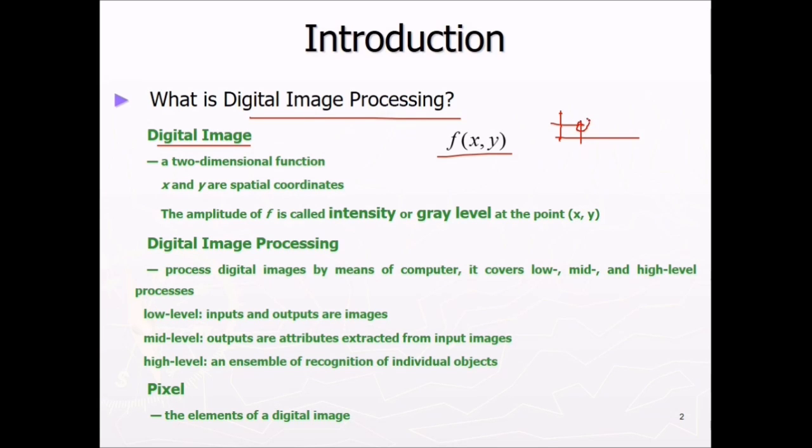So this x, y are spatial coordinates and the amplitude of f is called the intensity or gray level at that point. This f(x, y) is nothing but the intensity or gray level at this particular location or point.